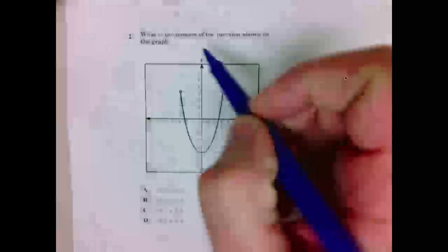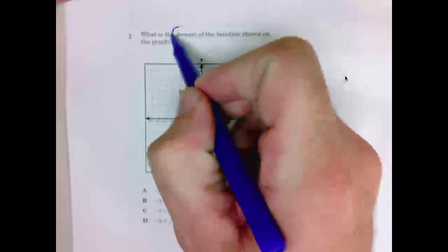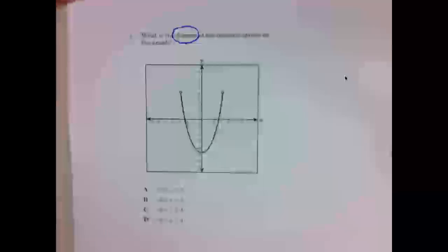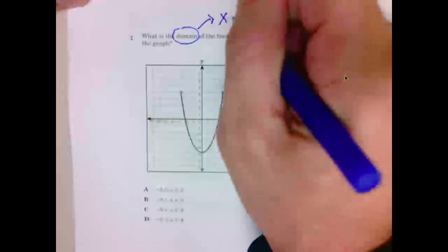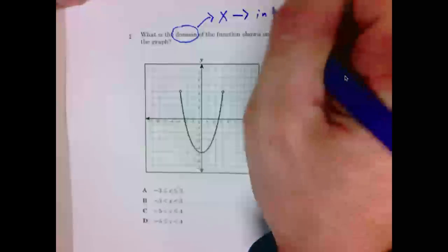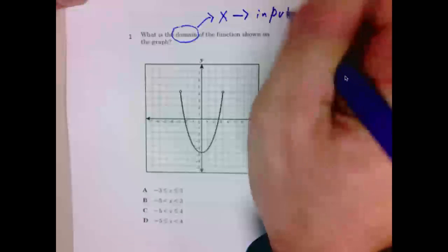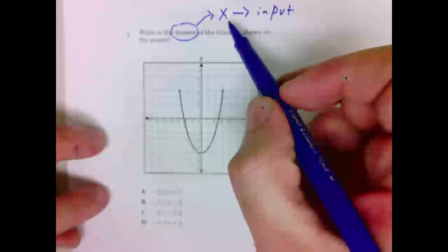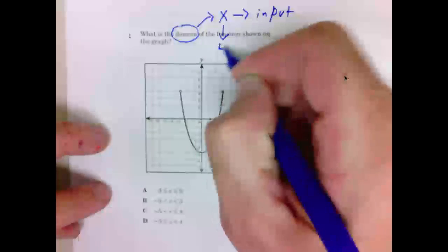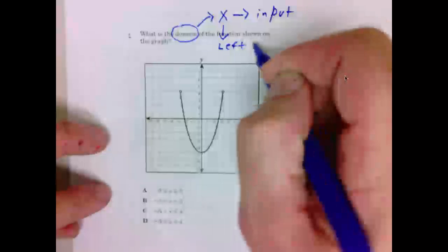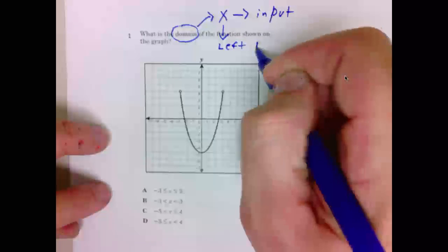Number one, it says, what is the domain of the function graphed below? Well, we hopefully know by now that domain is the X, or the input values. And we hopefully also know that the X's go from left to right.